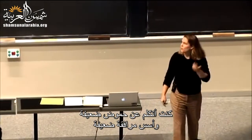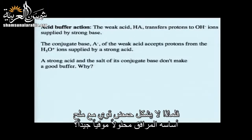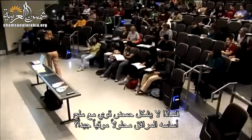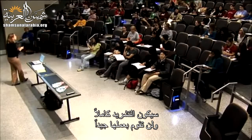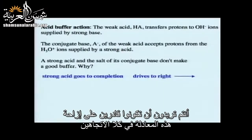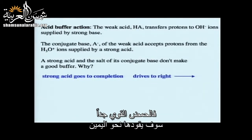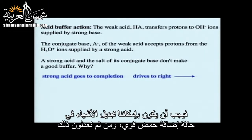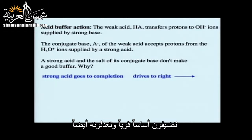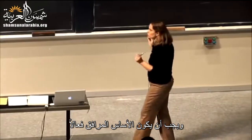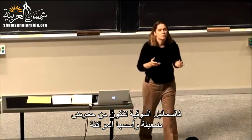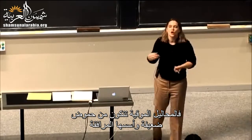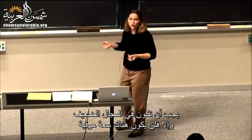Why would a strong acid and the salt of its conjugate base not make a good buffer? Strong acids dissociate almost completely — you want to be able to shift the equation both directions, but a strong acid drives it to completion. For a good buffer, you need to be able to switch things around. A strong acid has an ineffective conjugate base. So buffers must be made up of weak acids and their conjugate bases, or weak bases and their conjugate acids — they need to be in the weak range or there's no buffering capacity.